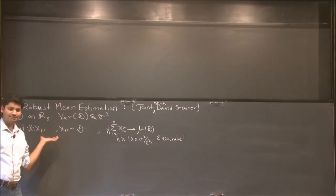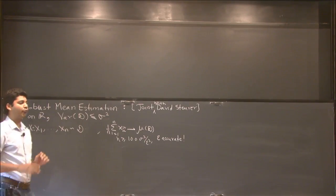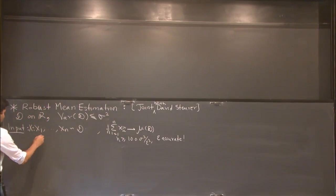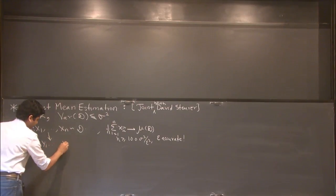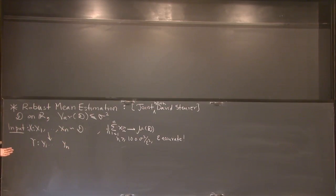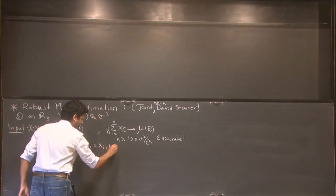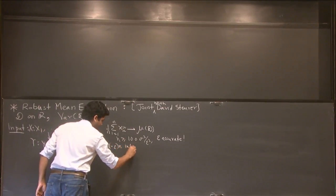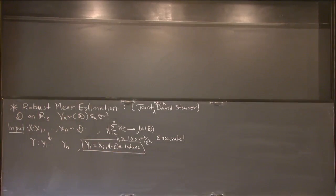Let's say you have an IID sample X, but now it goes to an adversary, and the adversary has control to change any arbitrary epsilon fraction of the samples and replace them by whatever they want. In effect, what you get to see is an adversarial corruption Y of the samples. The only guarantee you have about this Y is that Y_i equals X_i for 1 minus epsilon N indices i. That's all you know.